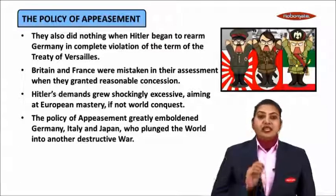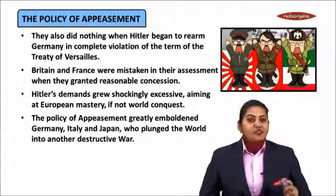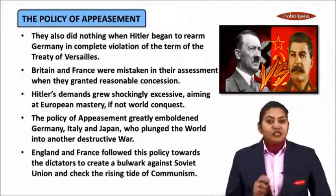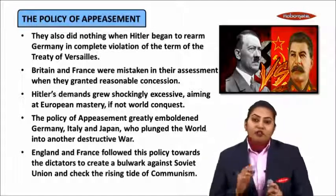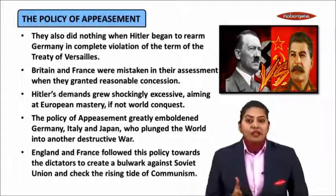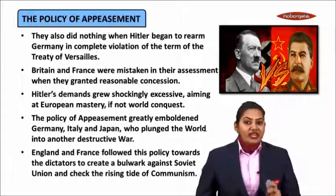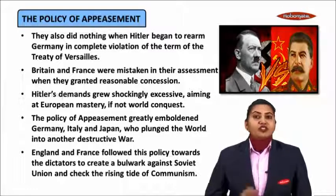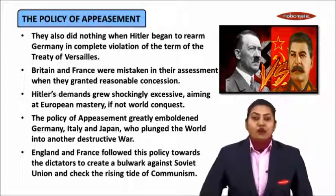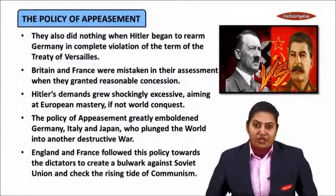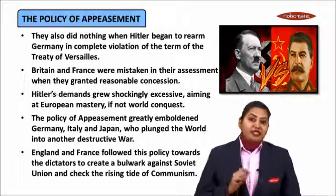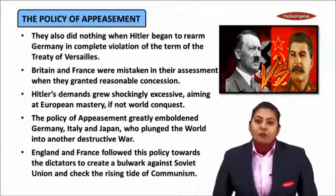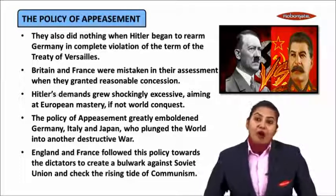The policy of appeasement greatly emboldened Germany, Italy and Japan, who plunged the world into another destructive war. England and France followed this policy with yet another intention — they followed it towards dictators to create a bulwark against Soviet Union and check the rising tide of communism. Hitler was a staunch anti-communist, whereas Joseph Stalin was a hard-lined communist leader of Soviet Russia. England and France had anticipated that if these two dictators fought against each other, they would be mutually destroyed, and hence, in order to stop communism, they felt they should empower Adolf Hitler.